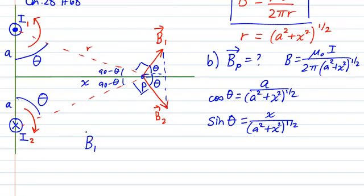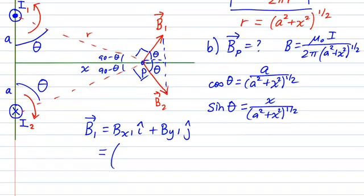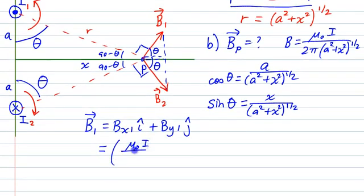So what this is going to do for us is, for example, if we want to write the magnetic field from the first wire in terms of its components, so Bx1 î + By1 ĵ, this is going to be pretty straightforward. It's just going to be μ₀I over 2π(a² + x²)^(1/2), but then we need to multiply that by the cosine of θ, which is a over (a² + x²)^(1/2). So rather than writing all that mess, we'll just put it like this.